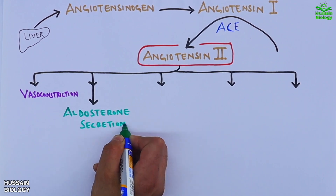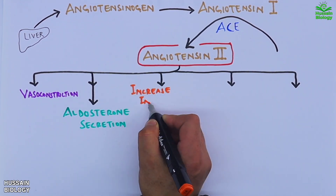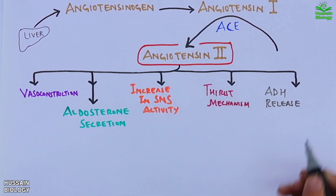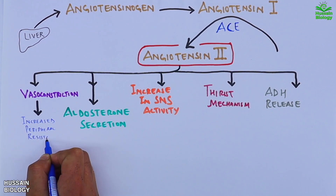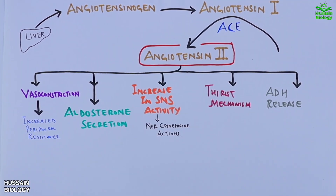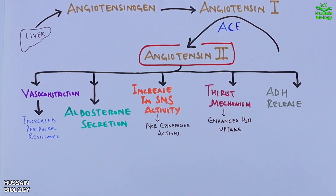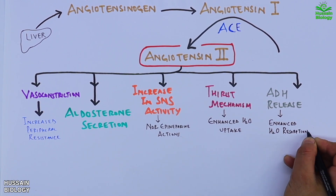Angiotensin 2 has a plethora of effects. First, it causes vasoconstriction. Second, it drives aldosterone secretion from the zona glomerulosa. Third, there is an increase in SNS activity. Fourth is the thirst mechanism. Fifth is ADH release. Vasoconstriction leads to increased peripheral resistance, increased SNS activity leads to norepinephrine actions, the thirst mechanism leads to enhanced water uptake, and ADH drives enhanced water resorption.